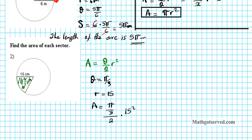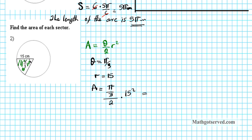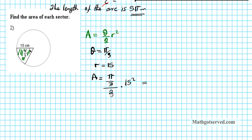So the area of the sector is pi over three, over two, times 15 squared. This looks kind of complicated — pi over three divided by two. How do we divide two fractions? We multiply the numerator fraction by the reciprocal of the denominator. Reciprocating two over one gives one over two, because division is the same as multiplying by the reciprocal. Times 15 squared is 225 over one.